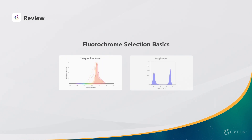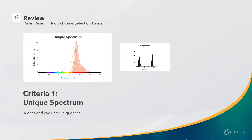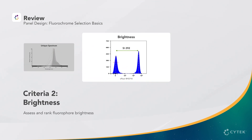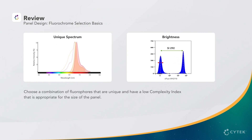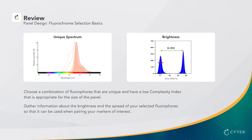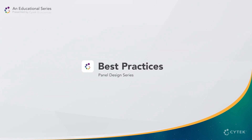In conclusion, there are two basic aspects to consider when selecting fluorochromes for your panel: fluorochrome uniqueness based on their full-spectrum signature, and brightness measured by stain index. To maximize your chances of designing a successful panel, choose fluorophores that are unique and have a low complexity index appropriate for the size of the panel. Then gather information about the brightness of your selected fluorophores so it can be used when pairing your markers of interest. This concludes Step 2 of our panel design series. In Step 3, we will talk about spillover spreading error and factors that impact it. Visit Cytec's SpectroLearn educational portal to learn more.